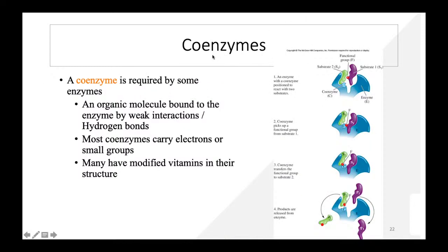Coenzymes are also required by some enzymes. For example, enzyme E with substrate 1 and substrate 2: substrate 1 has a functional group (shown in red). The coenzyme transfers that functional group from substrate 1 to substrate 2, producing product 1 (without the functional group) and product 2 (with the functional group). The cofactor acts as a messenger. Coenzymes are organic molecules bound to enzymes by weak interactions such as hydrogen bonds; most carry electrons or small groups.